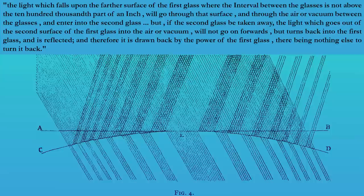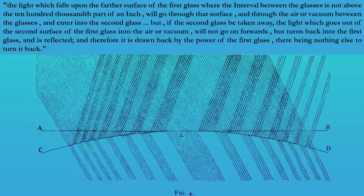Or to turn the problem around and put it in Newton's words, the light which falls upon the farther surface of the first glass will go through that surface and enter into the second glass. But if the second glass be taken away, the light will not go on forwards, but turns back into the first glass and is reflected, and therefore it is drawn back by the power of the first glass, there being nothing else to turn it back.